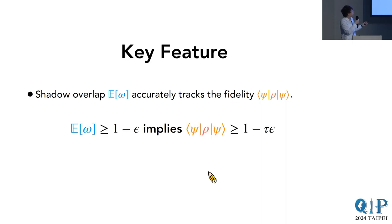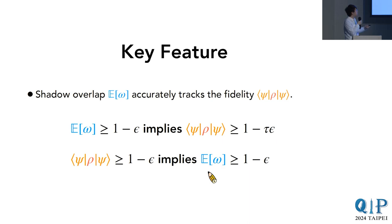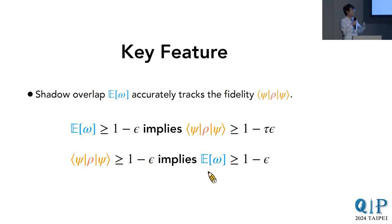There are two key properties of the shadow overlap E(omega). First, if the shadow overlap is close to 1, it implies the fidelity would also be close to 1—with a slackness that comes from tau, the relaxation time. On the other hand, if the fidelity is close to 1, then the shadow overlap would also be close to 1. Hence, for states where tau is not too large—for almost all states, tau is upper bounded by poly n—the shadow overlap accurately tracks the fidelity.